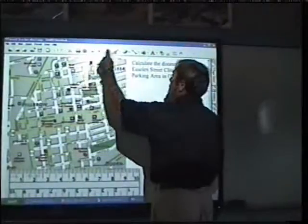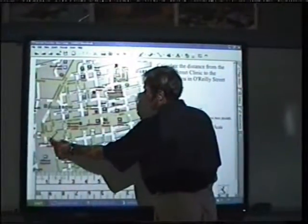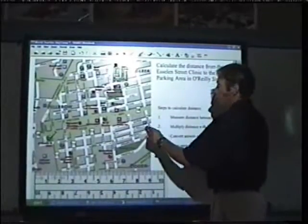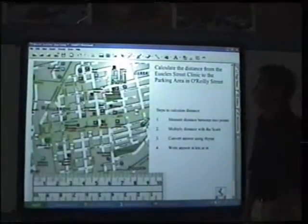On this one we can quickly show them and highlight the two areas that they need to find. Essendon Street Clinic is over there and the parking area that they need to calculate the distance to is over there.